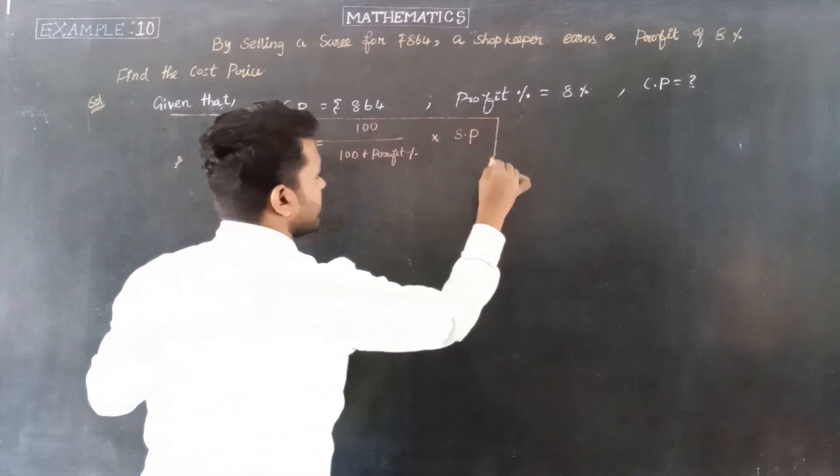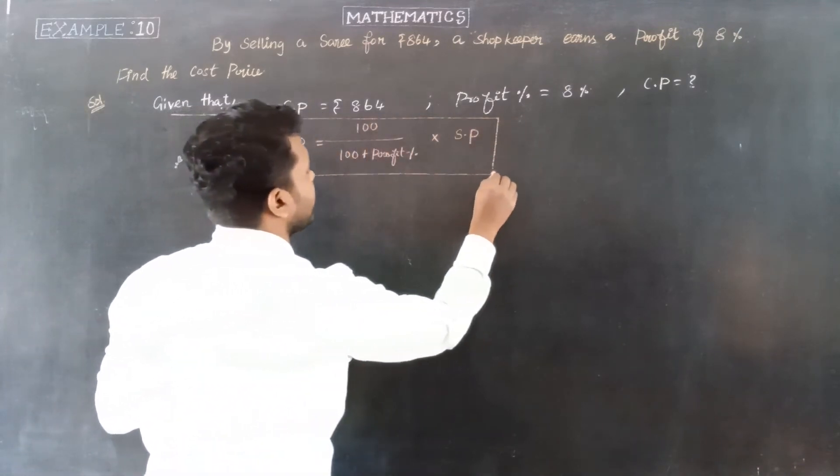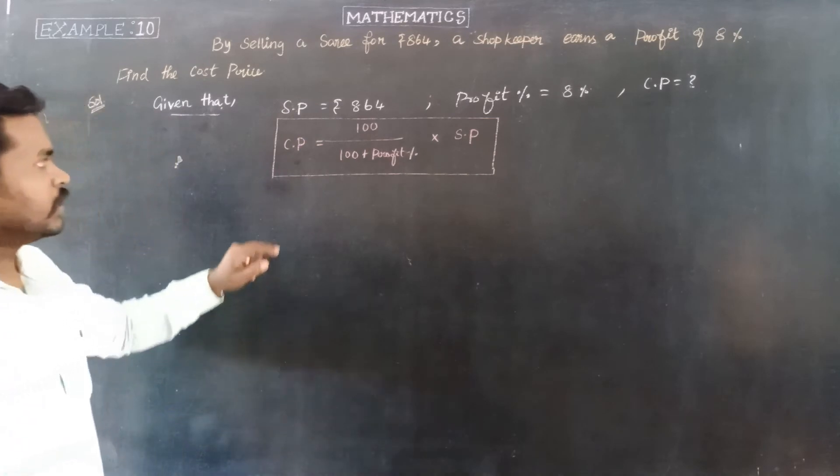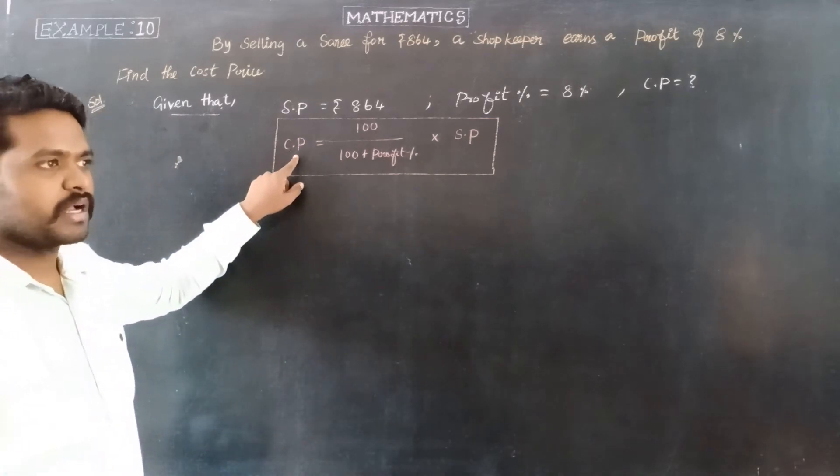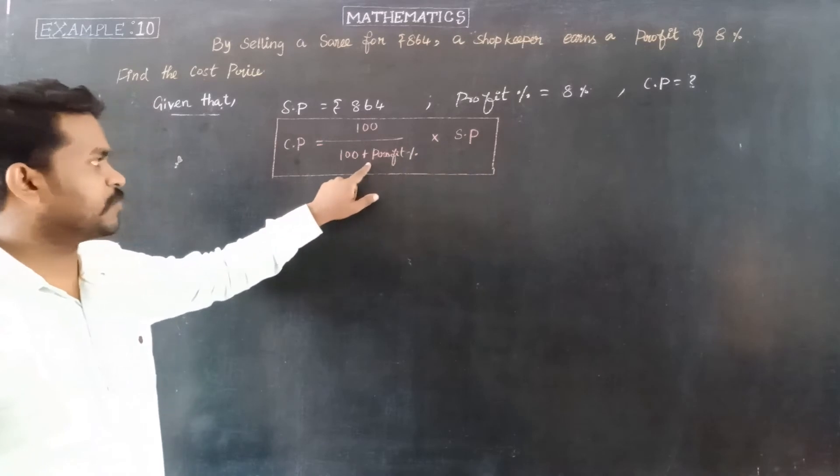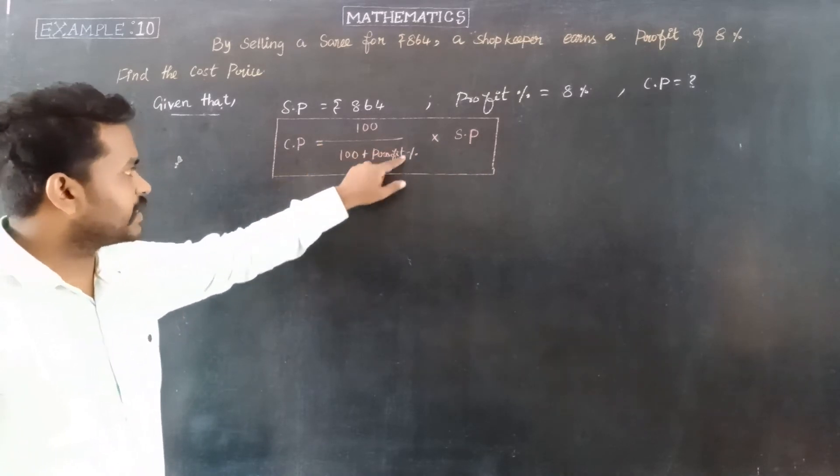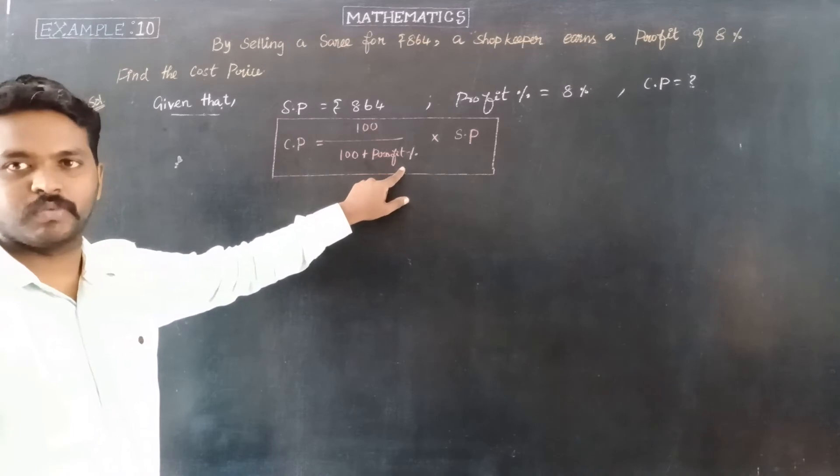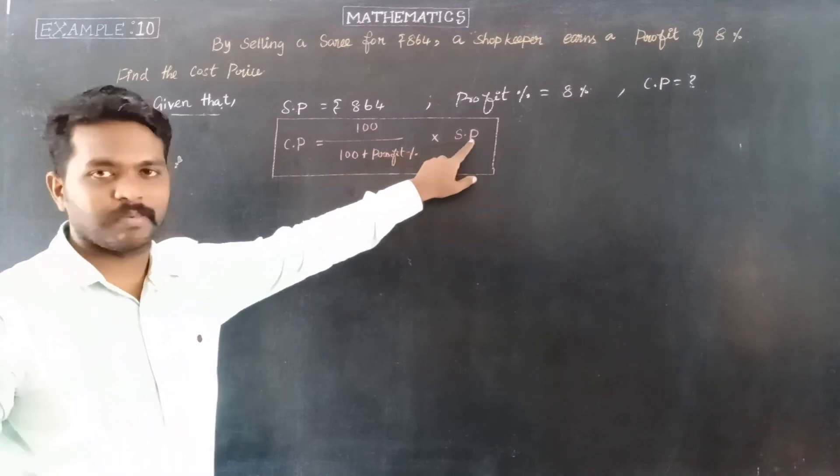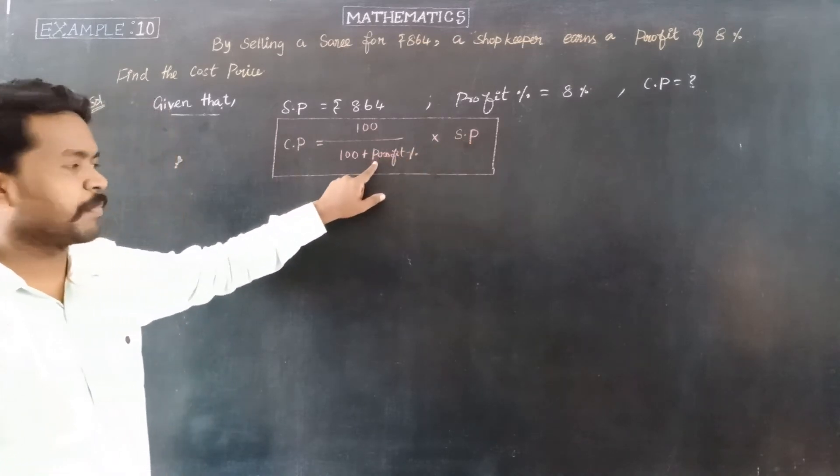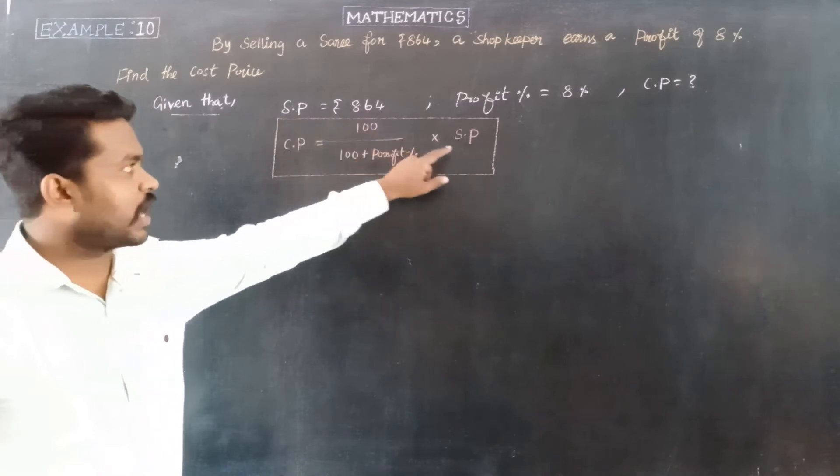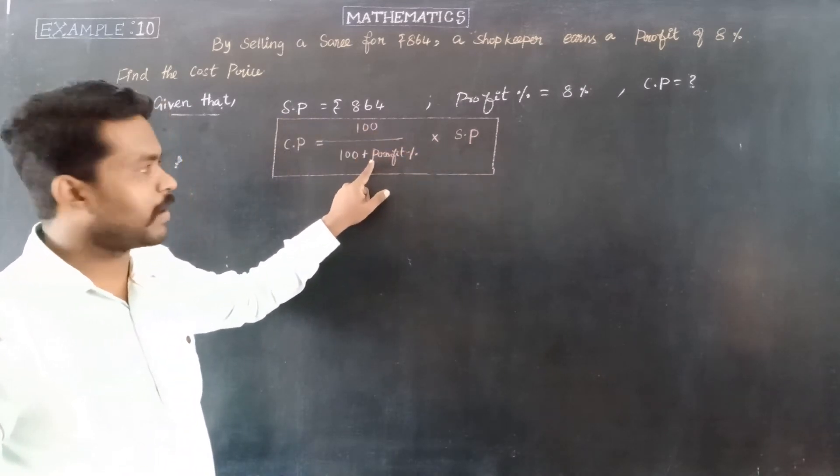If there's a loss percentage instead of profit percentage, then the formula uses 100 minus loss percentage in the denominator.